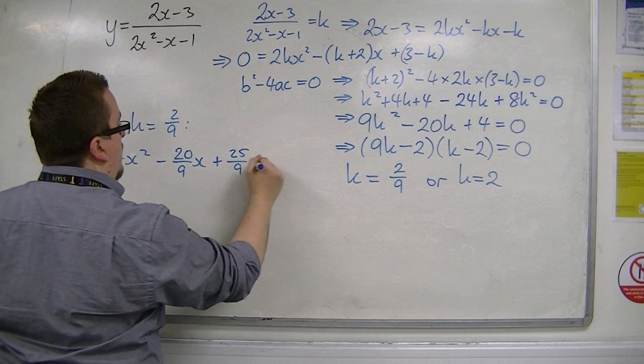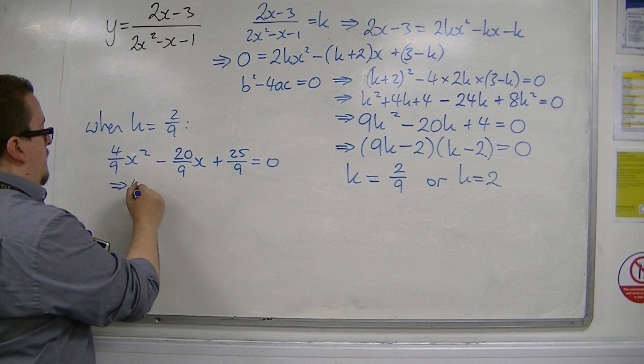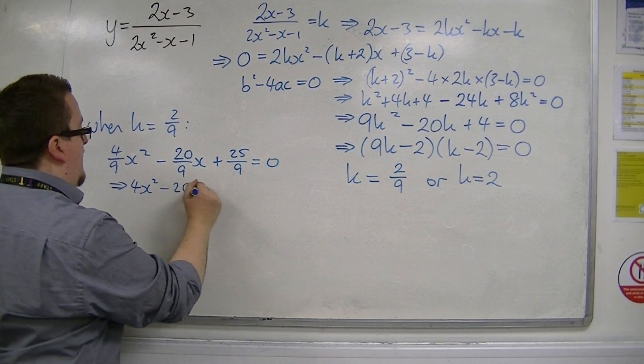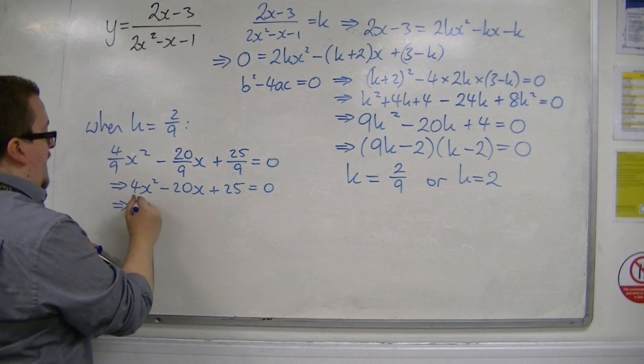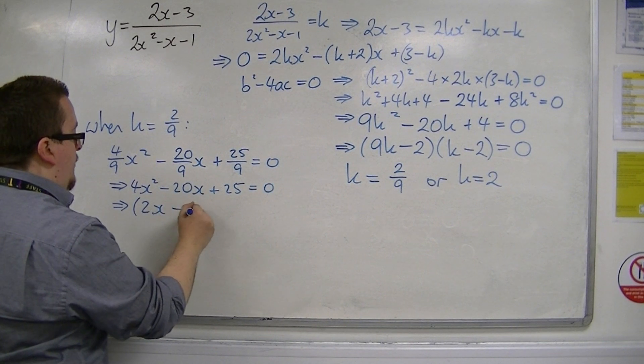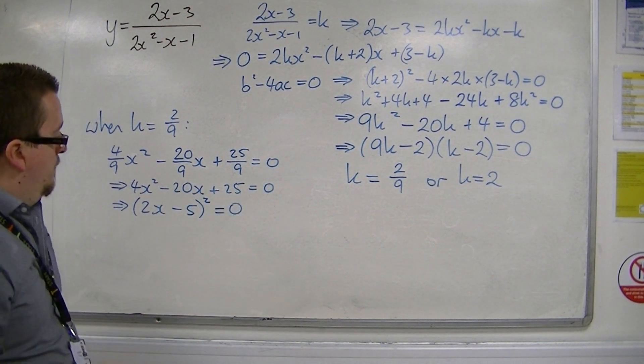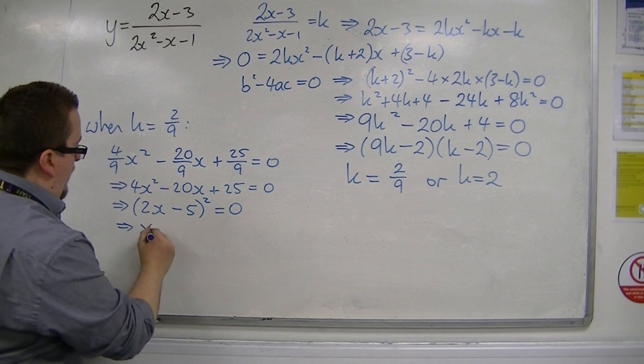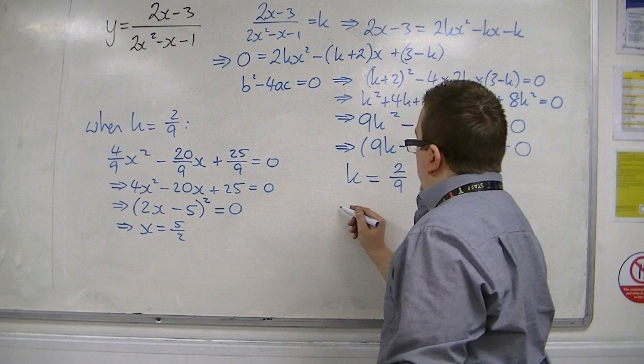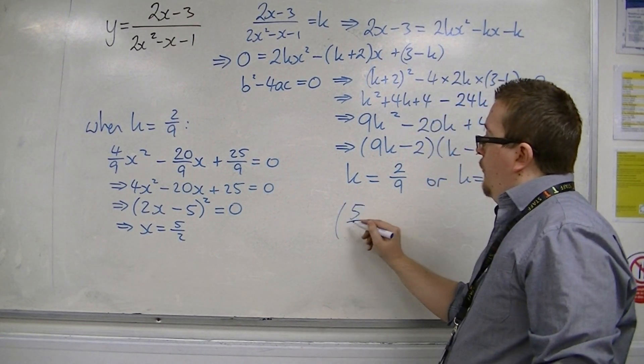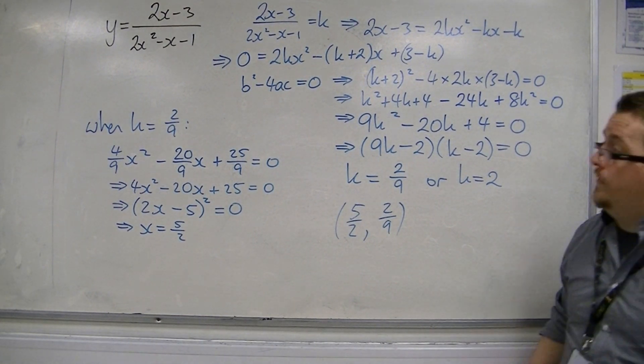If I multiply through by 9, I get 4x squared minus 20x plus 25 is 0. So that factorises to 2x minus 5 squared is 0. So x is equal to 5/2. So that means that one of the stationary points is at 5/2, 2/9. So that's one of the coordinates of the stationary points.